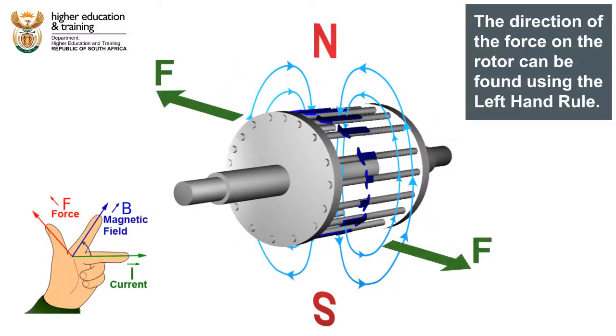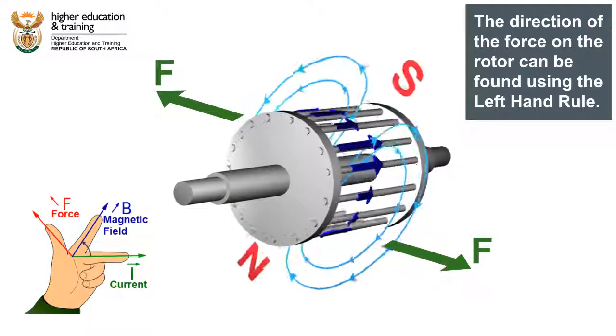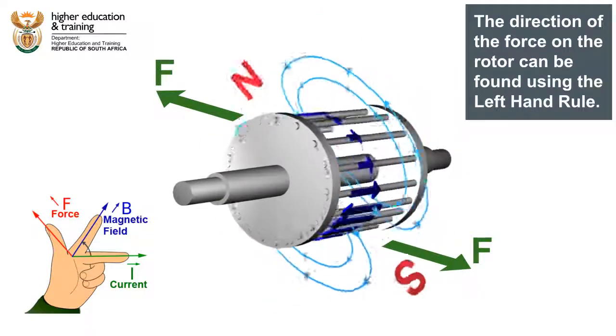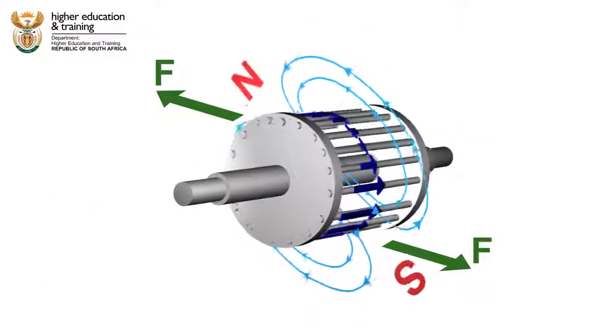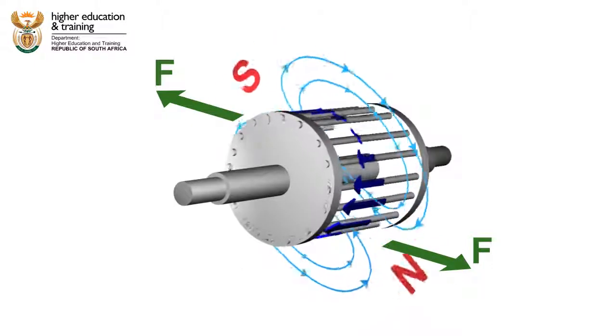The rotor also becomes an electromagnet. Therefore, the rotor electromagnet will try and line up with the stator field. But as the stator field is always rotating, the rotor ends up chasing it round and round.